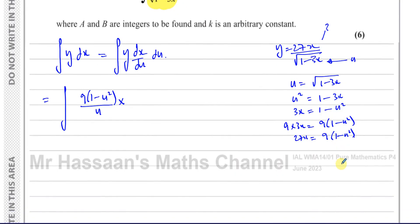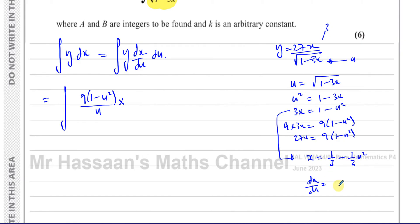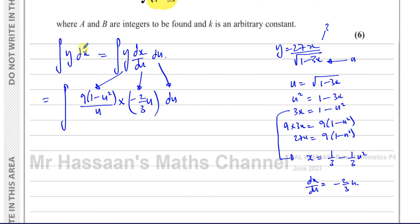To find dx/du, it's easiest to differentiate x directly with respect to u. We have x equals (1 minus u squared) over 3, which we can write as one-third minus u squared over 3. Differentiating: dx/du equals 0 minus (2/3)u, so dx/du equals minus (2/3)u.